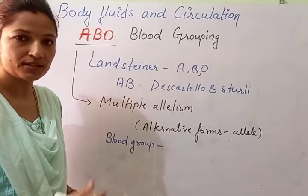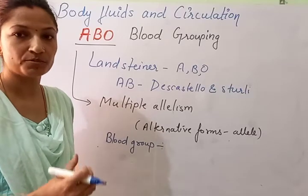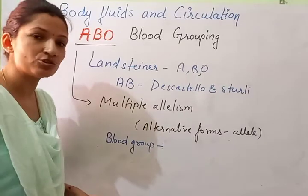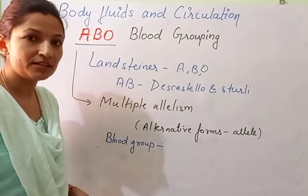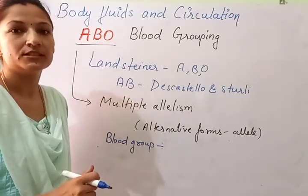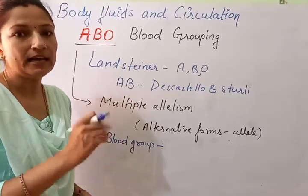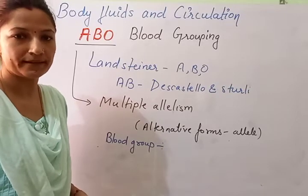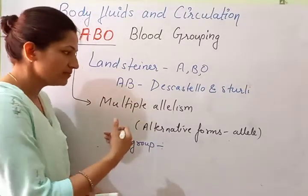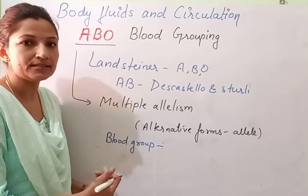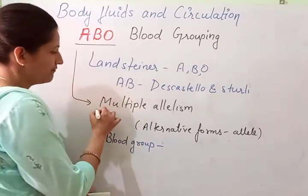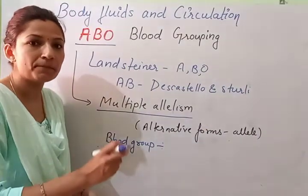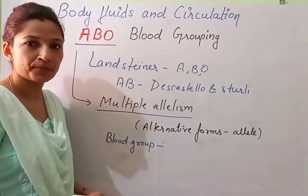Different types of blood groups — blood group A, blood group B, AB, and O — all four types are different because of the presence of three alleles. Out of the three, two possible combinations will be there. So as the alleles involved in this inheritance are more than two, this is a case of multiple allelism. This is the example of the multiple allele concept.